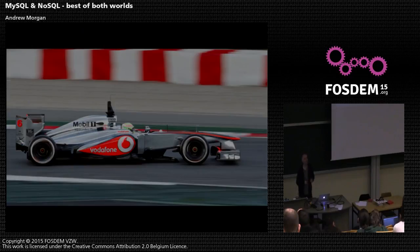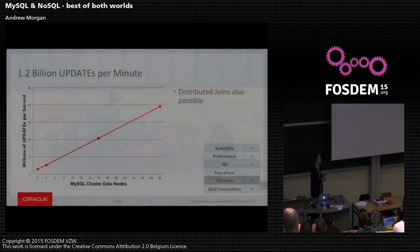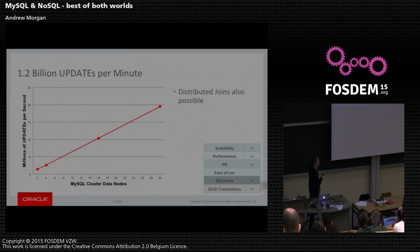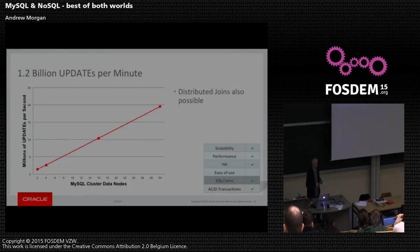We all know how to scale performance with MySQL — you just add lots of read slaves and you can scale out reads as much as you like. Where it gets trickier is when you want to scale writes. MySQL Cluster is very good at that. This benchmark was done a couple of releases ago — scaling out on commodity hardware with 30 servers, 30 data nodes, we're able to scale to 1.2 billion updates per minute. So if anyone ever tells you they have to go with a NoSQL data store because that's the only way they can get the right performance, just ask them: what are you doing that requires more than a billion updates a minute?